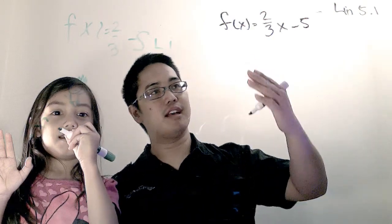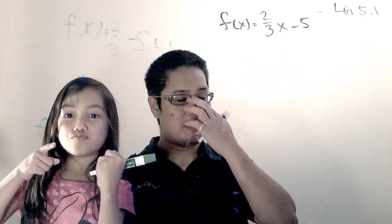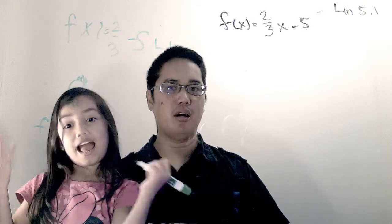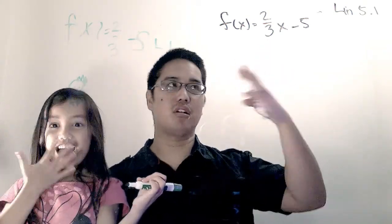Here's what we've got to do. We're going to graph f of x equals two-thirds x minus five. This is a linear function you can tell because two-thirds is the slope.